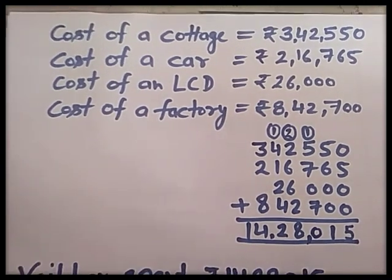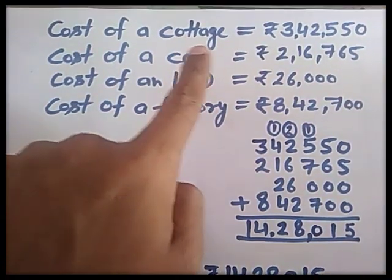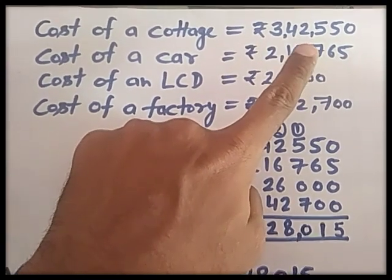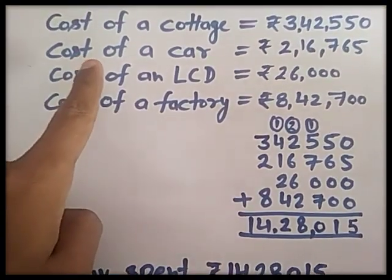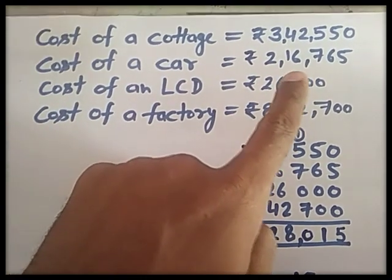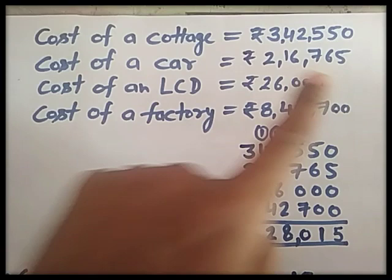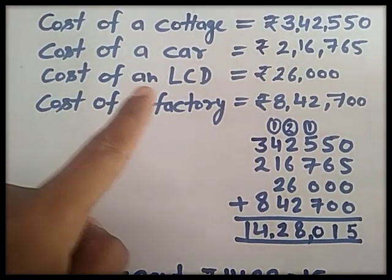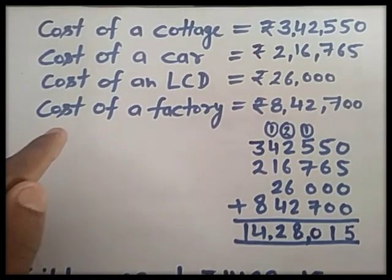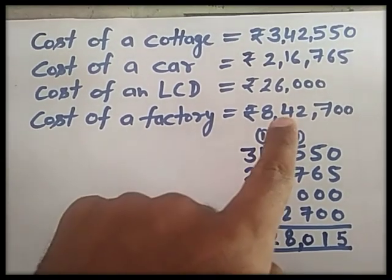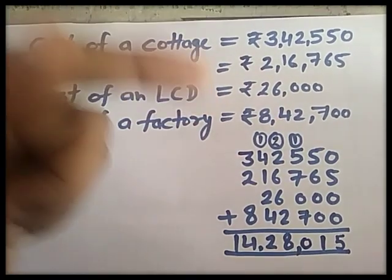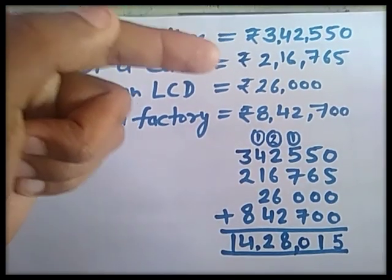Now, solution. Cost of cottage is given, i.e. 3,42,550. Cost of a car is also given. Next, cost of factory is also given, Rs. 8,42,700. Now I am going to add these given numbers.